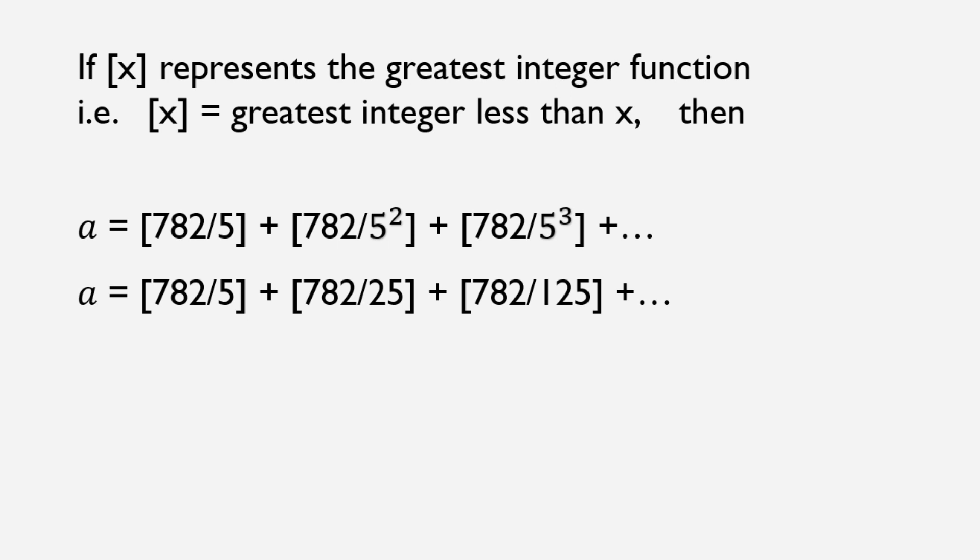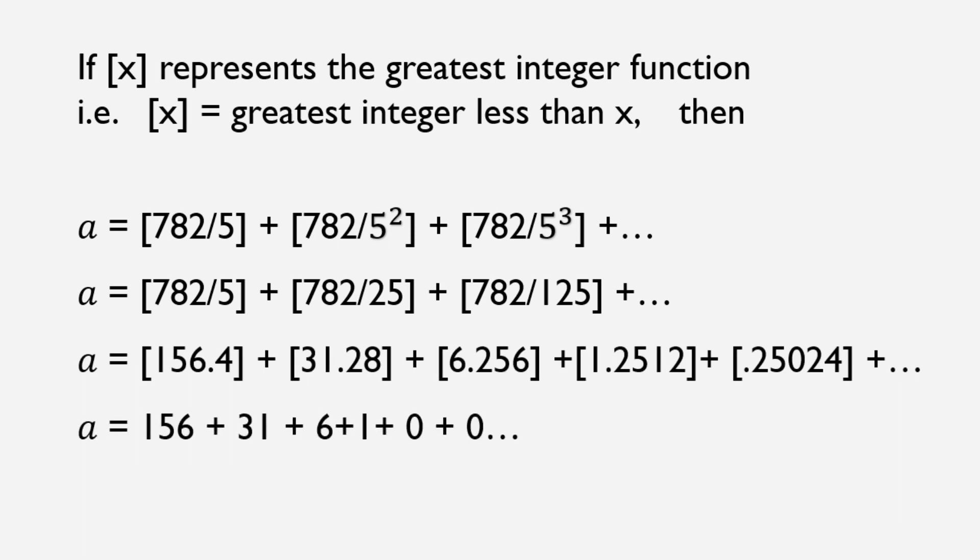And in our second series, 782 by 5 square is the number of terms, and so on. On further solving, we get 156 plus 31 plus 6 plus 1 plus 0.